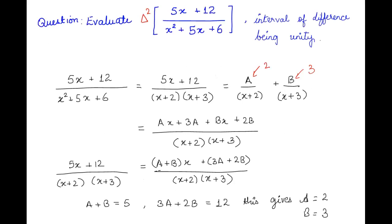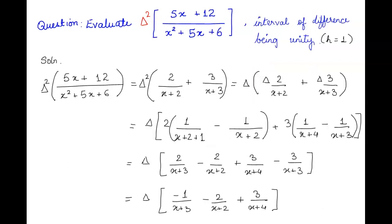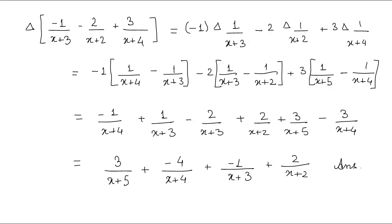To summarize what we did in this question: we were asked to evaluate delta² applied to the expression with h=1. We first factorized the denominator into two factors, then applied partial fractions to find A=2 and B=3. Substituting those values and applying the forward difference operator twice — once to each partial fraction term and once again — gave us the final answer: 3/(x+5) - 4/(x+4) - 1/(x+3) + 2/(x+2).